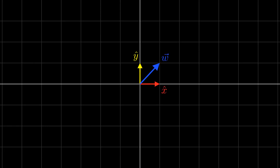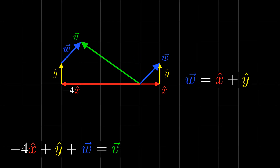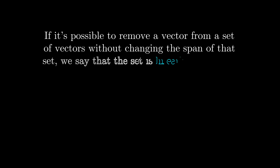So let's consider a set that seems like it has too many vectors, like these vectors. They span the plane. For example, this vector can be written as a linear combination of these vectors like this. However, notice that the vector w can be written as x-hat plus y-hat. This means that we can write v as just a linear combination of x-hat and y-hat. Thus, to span the plane, we don't even need all of the vectors in our original set. We can still reach every point in the plane without ever using w. This idea leads us to a new definition.